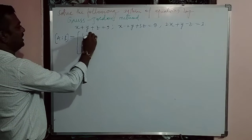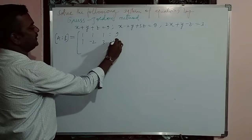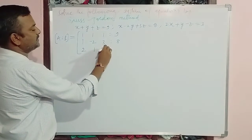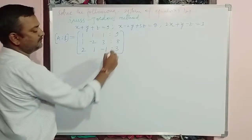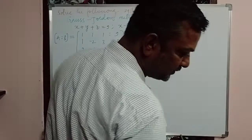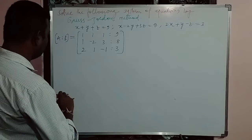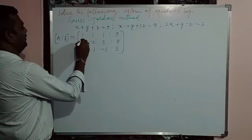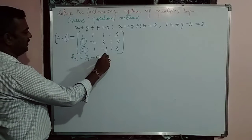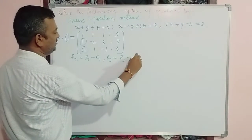The augmented matrix is: 1, 1, 1 | 9; 1, -2, 3 | 8; 2, 1, -1 | 3. Let me verify once again — 2x plus y minus z is equal to 3, okay. Now I am going to make the first two elements zero: R2 = R2 - R1, and R3 = R3 - 2×R1.